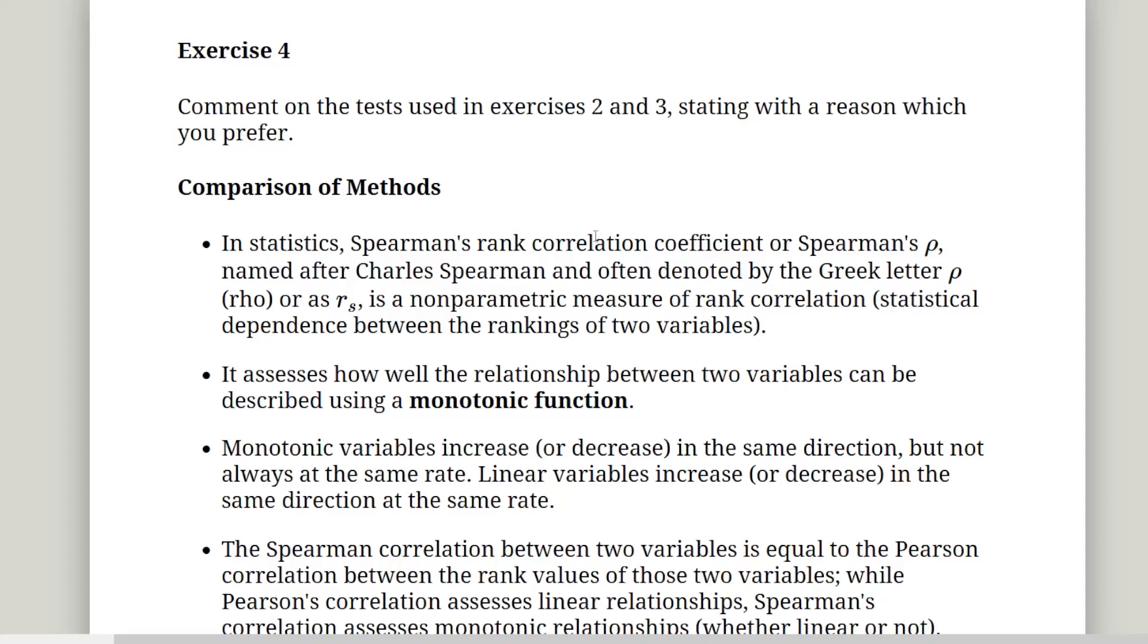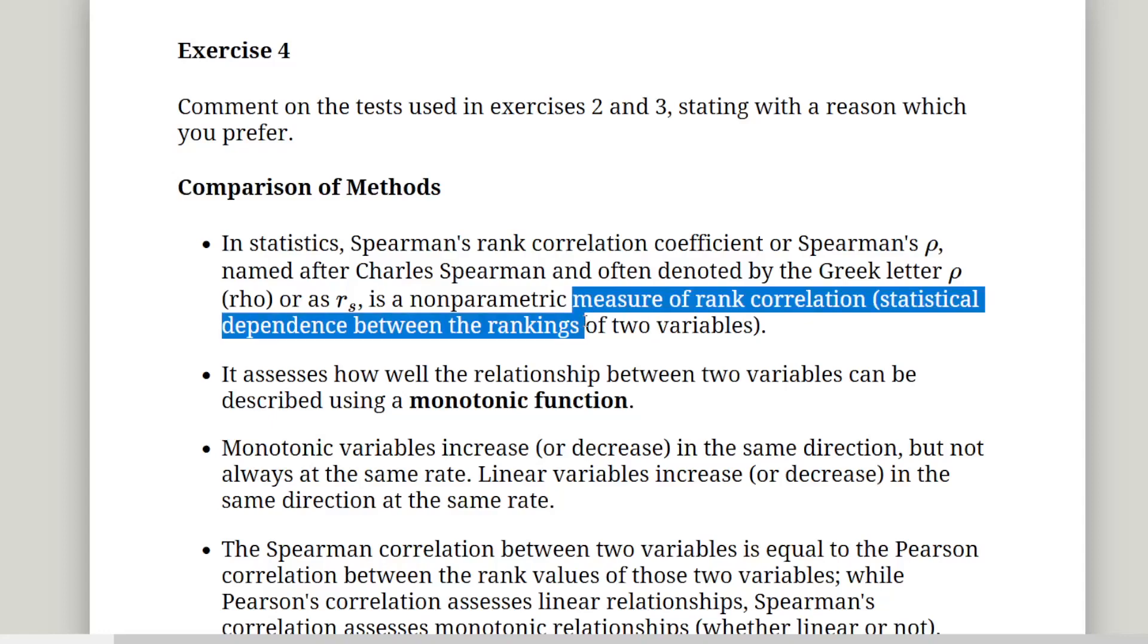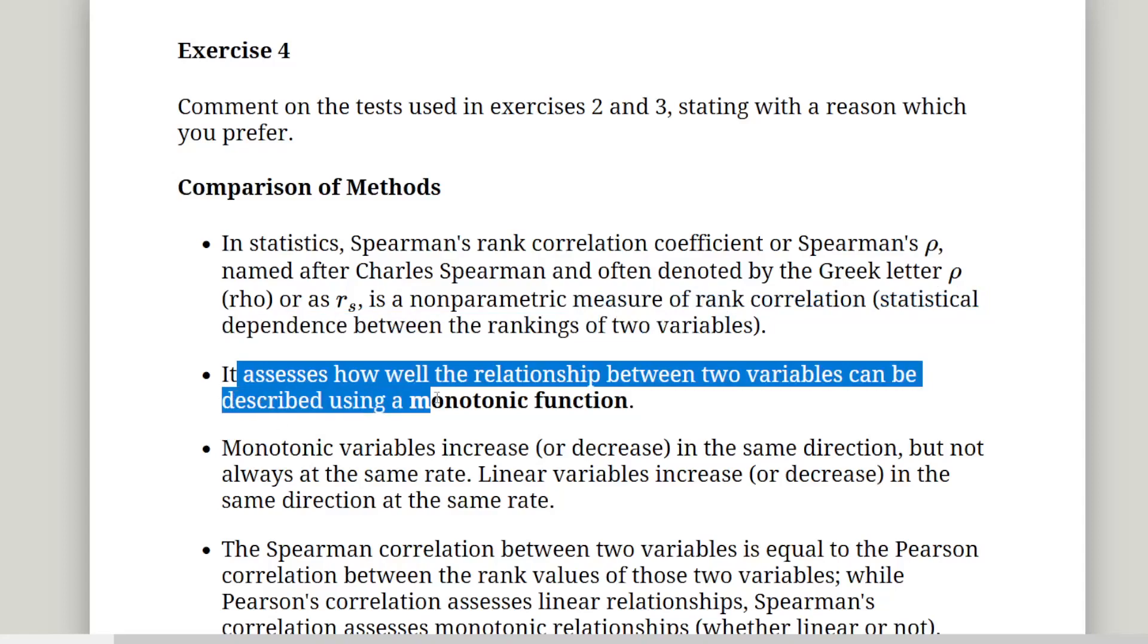This is an important thing, actually, why we would use Spearman's rank correlation coefficient. It's a non-parametric measure of rank correlation, which is statistical dependence on two variables. Now, this is important here. It assesses how well the relationship between two variables can be described with a monotonic function. So a monotonic function is a less stringent example compared to a linear relationship. So it's essentially, if one is consistently increasing or decreasing as the other increases or decreases, that's a monotonic relationship. So you could have a consistent trend upwards or downwards as the other one increases, but as long as it's sort of consistent.